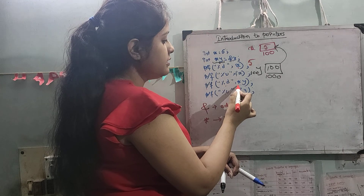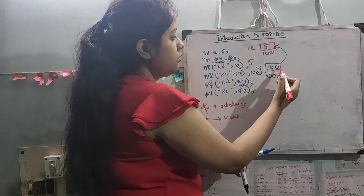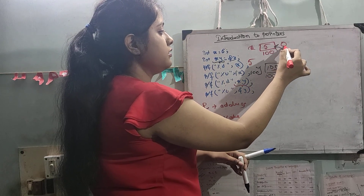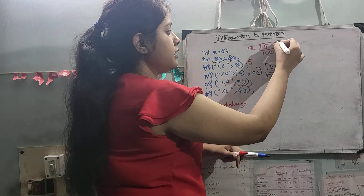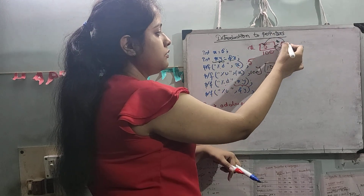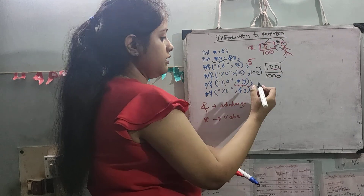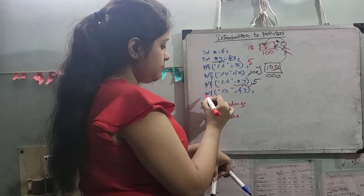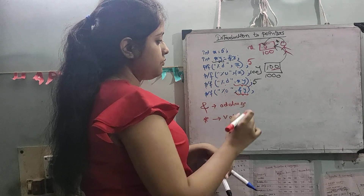Now printf with %d and star y: what is *y? y holds 100. If you are standing at address 100, you are standing outside. But when you apply the star operator, you go inside and fetch the value — so the value will be 5. Next, printf with %u and y: this prints the address stored in y.